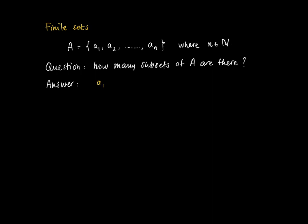Well, the answer is given by lining up the elements A1, A2, etc., until An. Any subset of A consists either of an element A1, yes or no. A2 is contained in S, yes or no, etc.